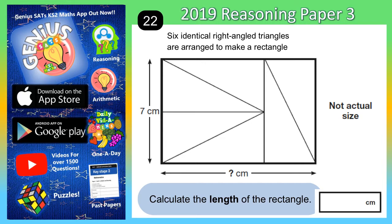So, six identical right-angled triangles are arranged to make a rectangle. We've got seven down the side there, and we've got a question mark along the bottom. And we've got to figure out what this question mark along the bottom is, because that is the length of the large rectangle, the whole thing.